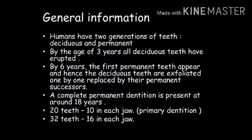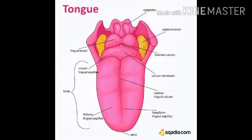In humans there are two types of teeth: deciduous or permanent. Deciduous or milk teeth, which begin to fall from around six years of age, are then replaced by permanent teeth.